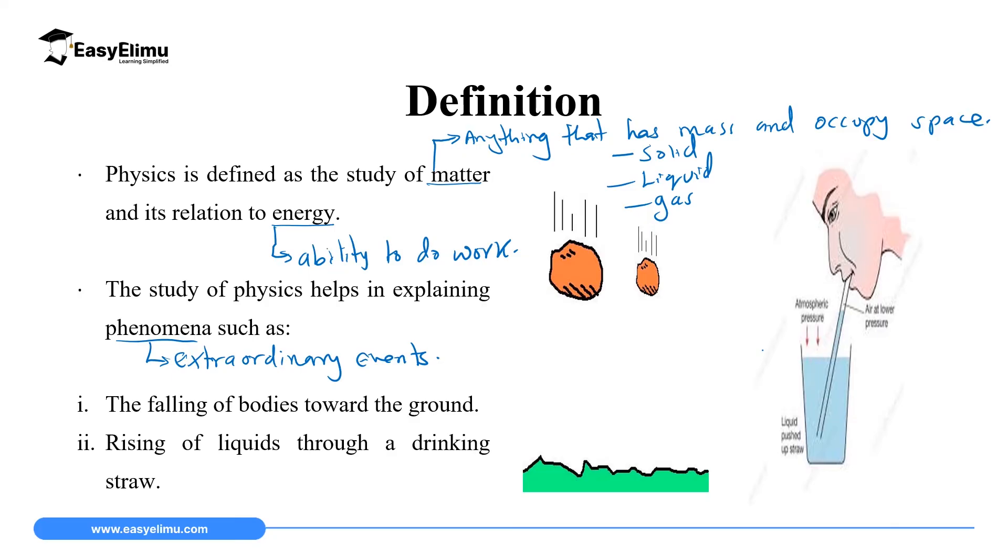Therefore, a few phenomena that are going to be explained using the knowledge of physics. One of it is falling of bodies towards the ground. As you can see in this first picture, we have two stones falling towards the ground. Physics is going to explain that. Another phenomenon is rising of liquids through a drinking straw. You suck using a drinking straw and the liquid rises into your mouth. Does it just happen like that? No, we are going to discuss it in the fourth topic of Form 1 called pressure.